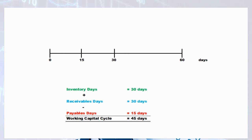The cash conversion cycle is simply receivable days plus inventory days minus payable days. Here's an example: inventory days of 30 days plus receivable days of 30 days minus payable days of 15 days gives us a working capital cycle of 45 days. This 45 days means the period between when the company pays cash for its working capital until it collects back the cash from its customers is 45 days on average.